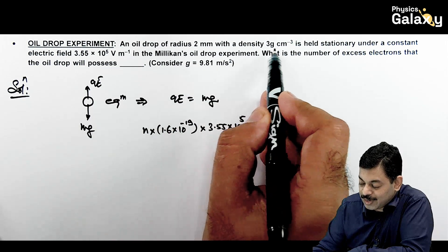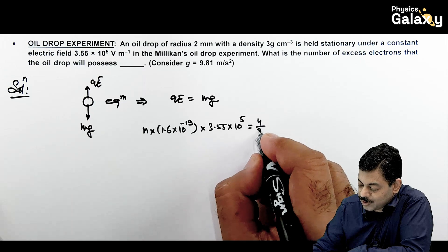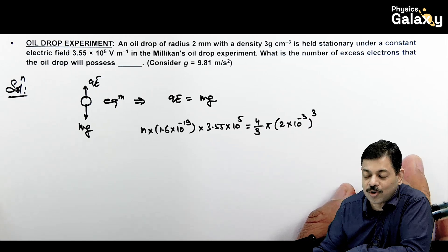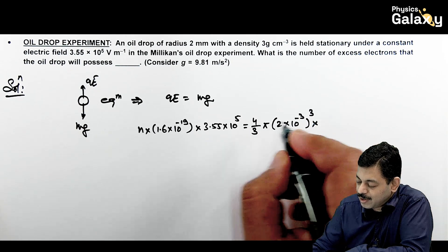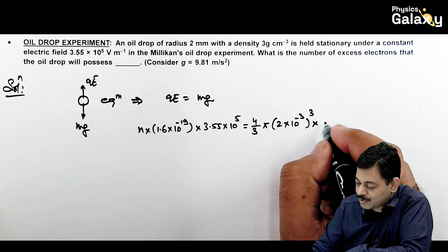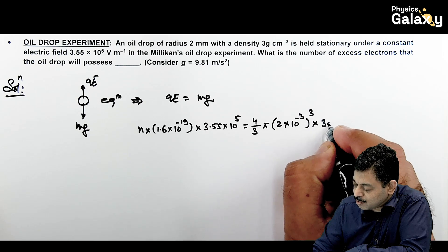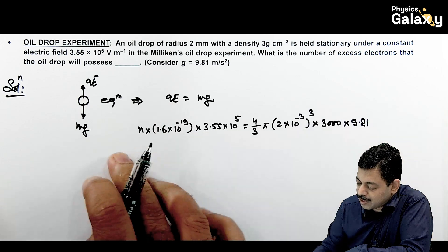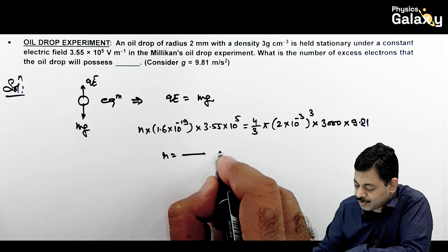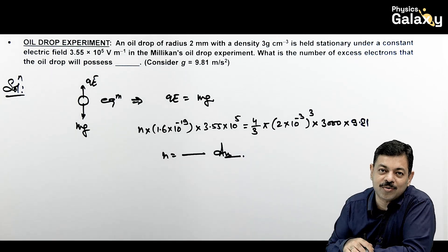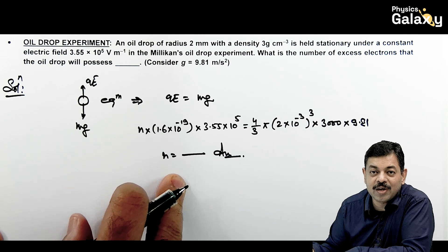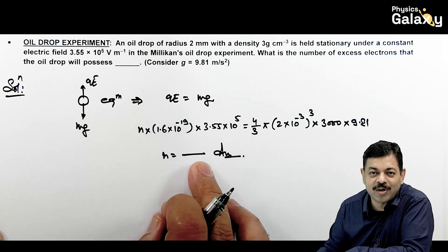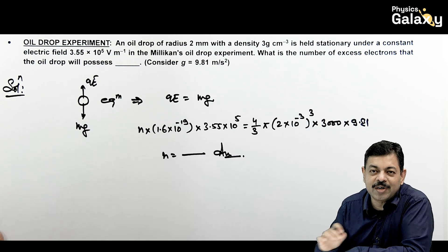Now mass will be, for a given density and radius, you can write as 4 by 3 pi r cube, r is 2 into 10 to power minus 3 cubed. This is the volume, 4 by 3 pi r cube multiplied by density which is 3 gram per centimeter cube. So this can be written as 3000, and then g is 9.81. Again I am leaving this part as a calculation for you. Calculate it and you will get the value of N, that will be the answer to this question. Calculate carefully and verify what exact value you are getting with calculator to verify whether you are getting the perfect answer or not.